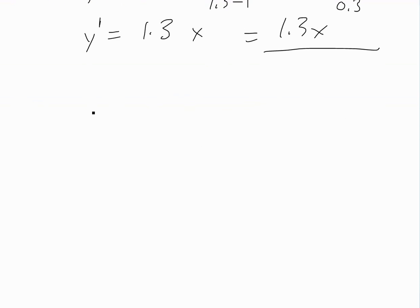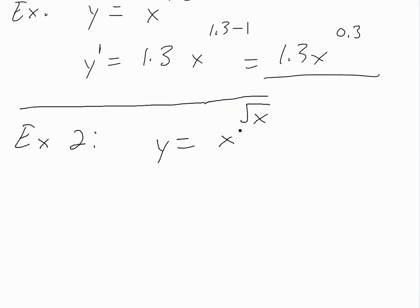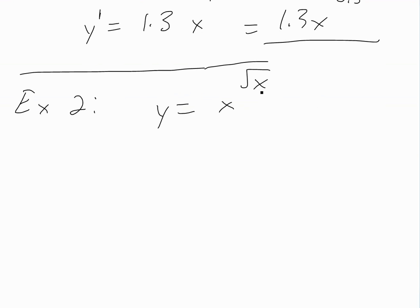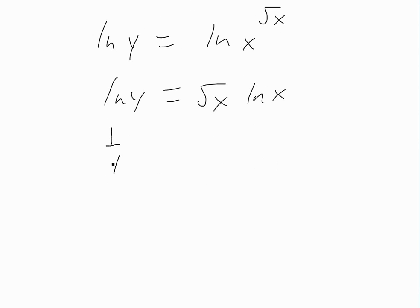Now let's do a tougher example that requires logarithmic differentiation. If y equals x to the power of root x, this one is tricky. Using logarithmic differentiation, we take ln of both sides: ln y equals ln of x to the power of root x. Then we bring the exponent root x down. That's the main reason we use logarithmic differentiation — to apply log rules and simplify. So we have ln y equals root x times ln x. Now we take the derivative.